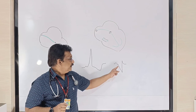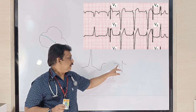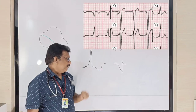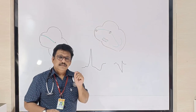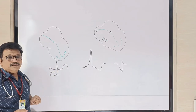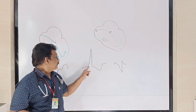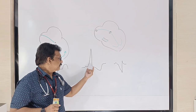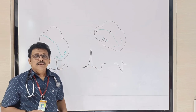In Type B WPW syndrome, you see a negative QRS complex following the P wave. There is also a delta wave here, with slurring in the downslope of the QRS complex. To summarize the classical findings of WPW syndrome: short PR interval less than three small squares, slurring of the upslope or downstroke of the QRS complex called the delta wave, a wide QRS complex, followed by ST depression and T wave inversion.